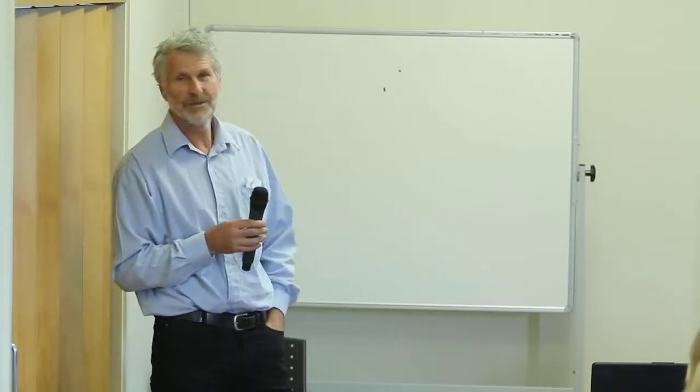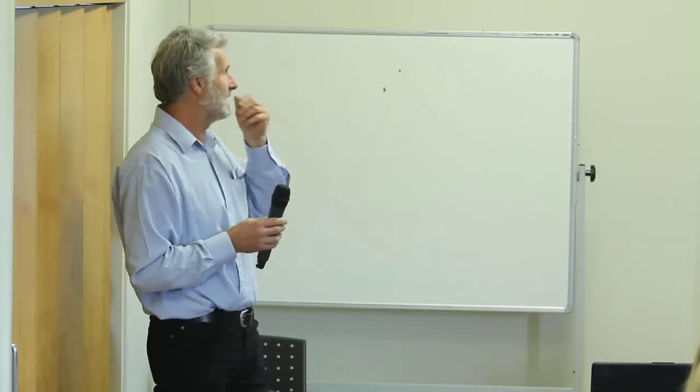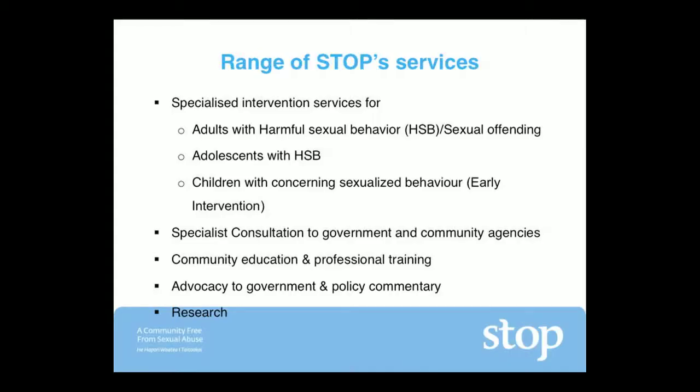Adolescents with harmful sexual behaviour, which go up to adolescents 17, 18. And over the last five or six years, we've been working with children as young as five who've been engaging in what we term concerning sexualised behaviour. So this is behaviour that's outside the developmental norm, and I'll talk about that in a minute.